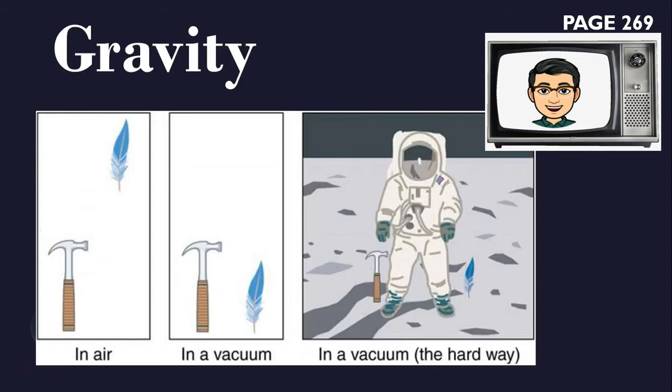Newton explained that gravity depends on the masses of the objects and the distance between them. Increasing the mass of the object increases their gravitational force, and increasing the distance between them decreases the force.